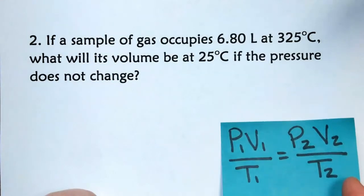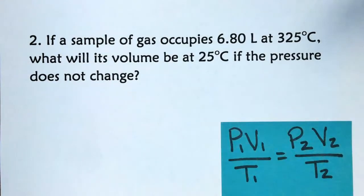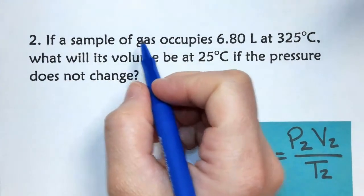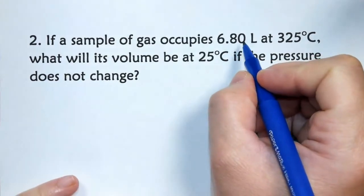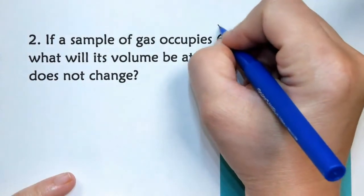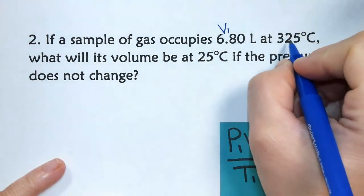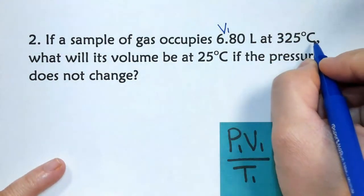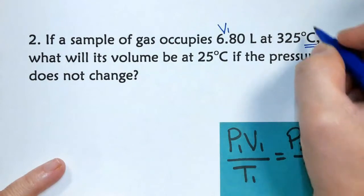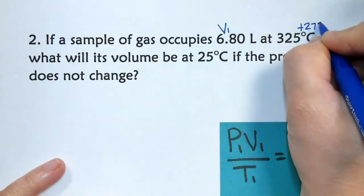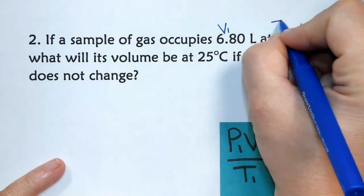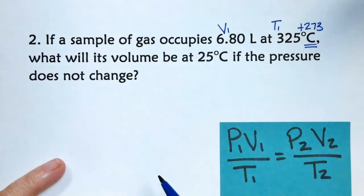Sample problem number two. Again, here is our equation, and as we read the problem, let's label the variables. If a sample of gas occupies 6.80 liters, that's the first volume I've come to, that's V1. At 325 degrees Celsius, oh, when you see Celsius, you add 273. This is our first temperature, so we'll call that T1. So it's 325 plus 273 is my T1.